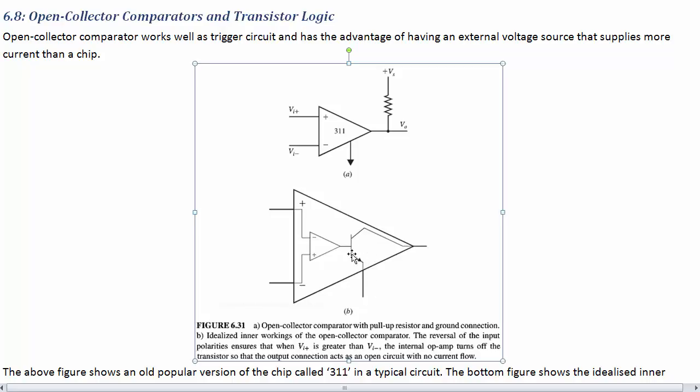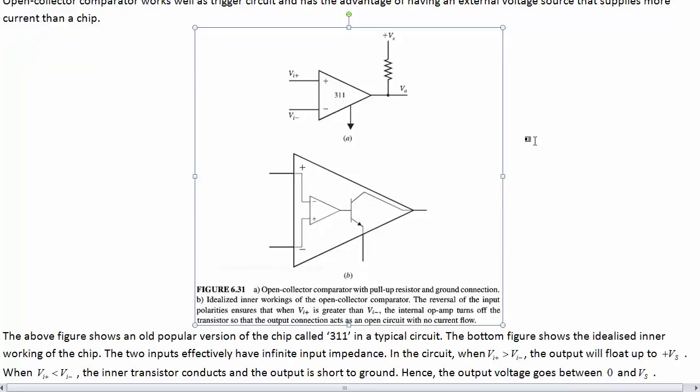So, when do we get a positive voltage here? We get a positive voltage when this negative terminal to the 311 is higher than the positive terminal. So, when this voltage is greater than this one, then we allow the BJT to conduct, and that's why this goes low in that case. It opens up a channel to ground.